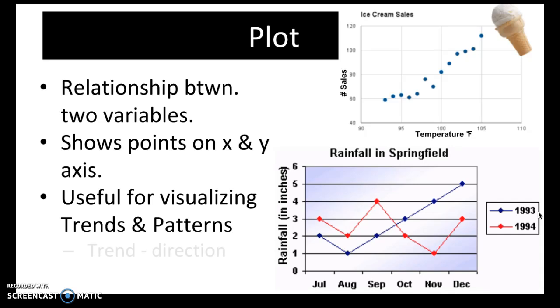When we say trends, we mean direction. So for example, the ice cream sale plot shown at the top here, we can see that as the temperature which is shown on the x-axis increases, so do the sales, the number of sales. So that is a trend. It's showing a direction.